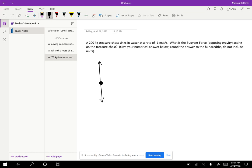So in this case, we have a 200 kilogram treasure chest, there's our mass, sinking at a rate of negative one meters per second squared. So meters per second per second, that is a unit for acceleration. So that's a known value. So we have mass and we have acceleration.